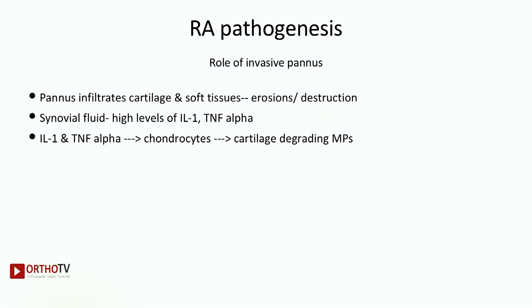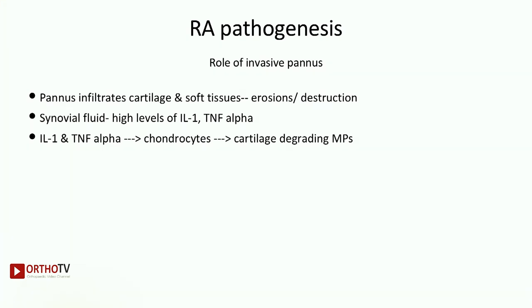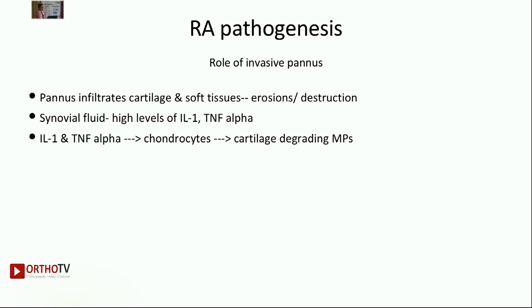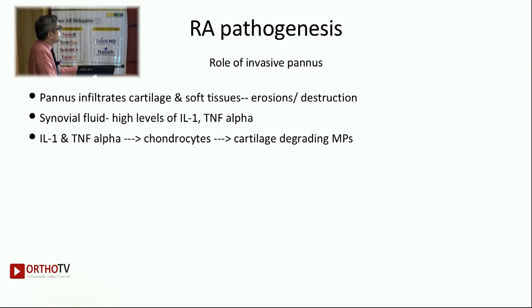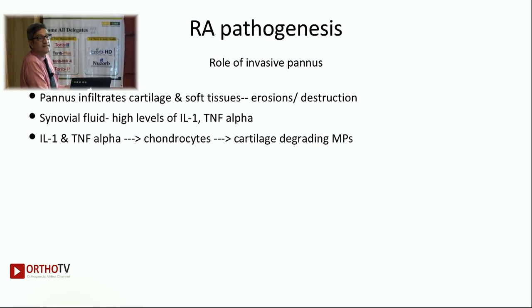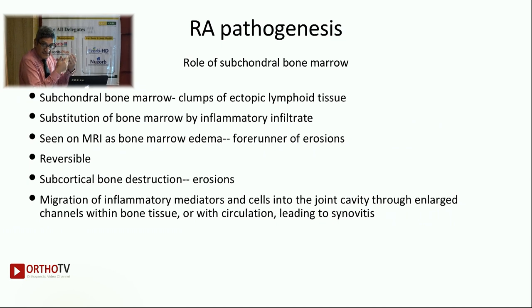This pannus then starts infiltrating the cartilages and soft tissues, leading to erosions and destruction. Synovial fluid as well as the lymphoid cells in the synovium have high levels of multiple cytokines, particularly TNF-alpha and interleukin-1. These cytokines also stimulate the chondrocytes to produce cartilage-degrading metalloproteinases, and that is how cartilage starts eroding. So pannus by itself erodes the cartilage, and through this cytokine mechanism it also causes erosions of the cartilage.